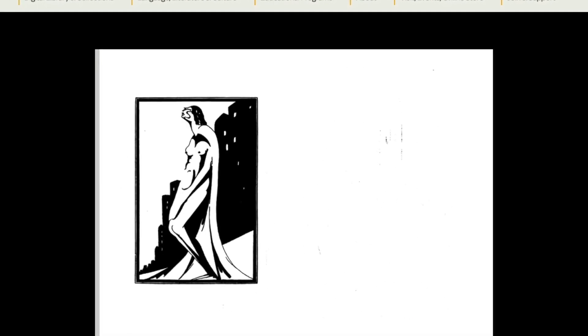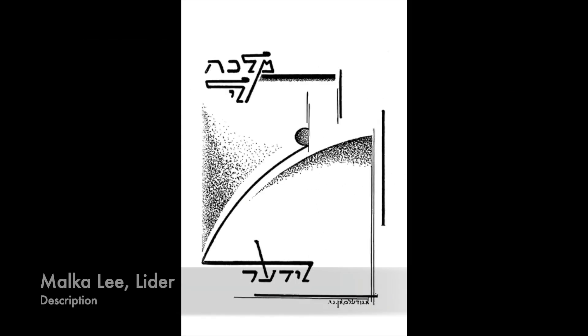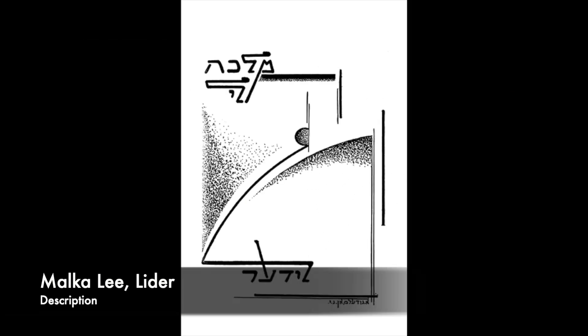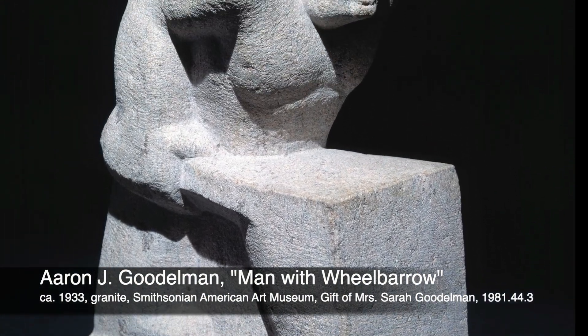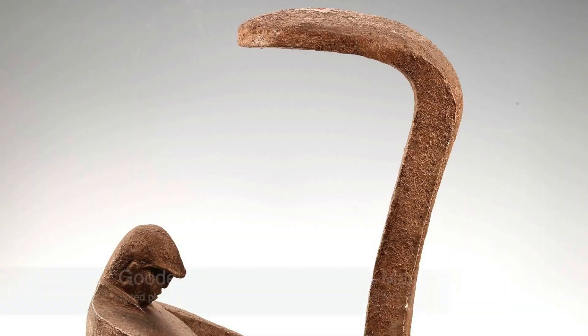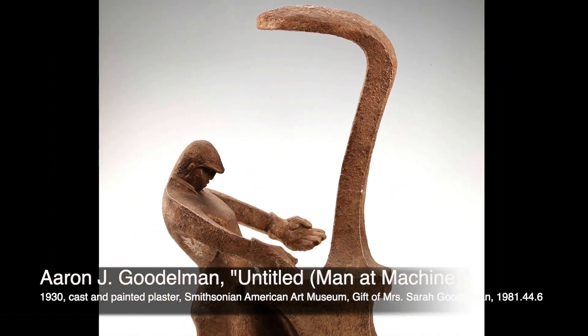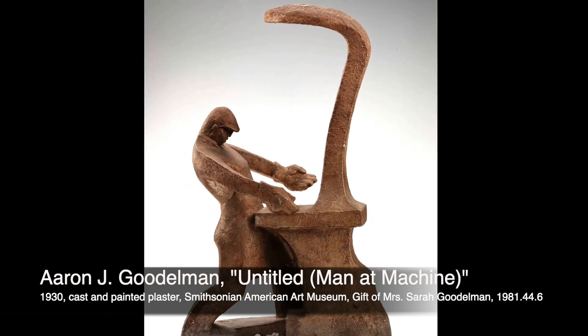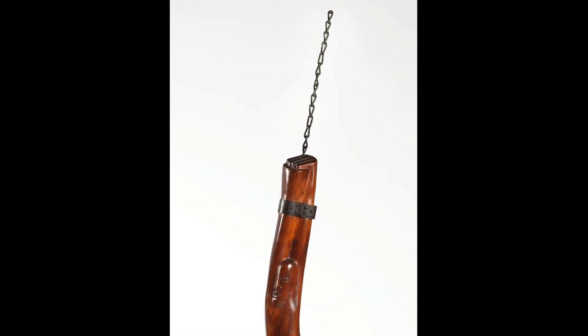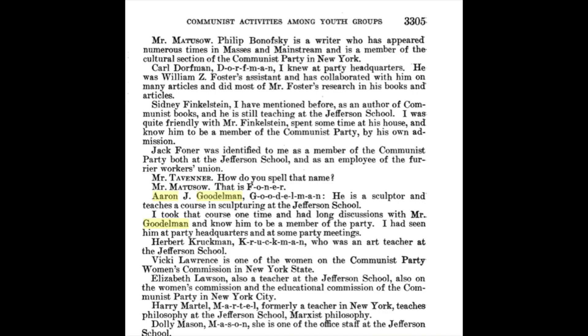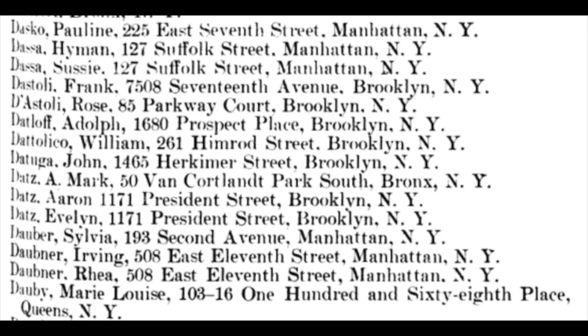The illustrations, as well as the general graphic design, were done by Harry's older brother, Aaron Goodleman. Aaron Goodleman did the graphic design for many books, including the covers for several books by the poet Malka Lee, but he was best known as a sculptor and his work has also been widely collected. His sculptures often celebrated the working class and protested against oppression. So I wasn't surprised when Aaron, Harry, and Dots all showed up as members of the Communist Party.